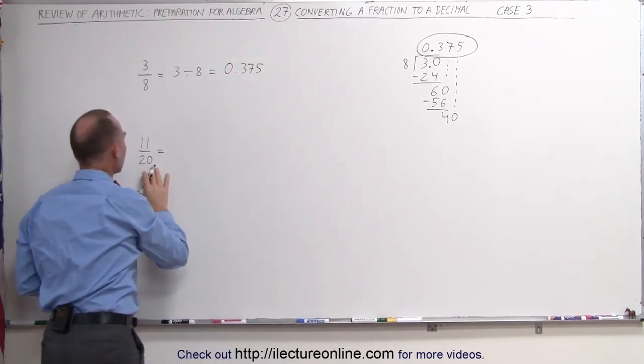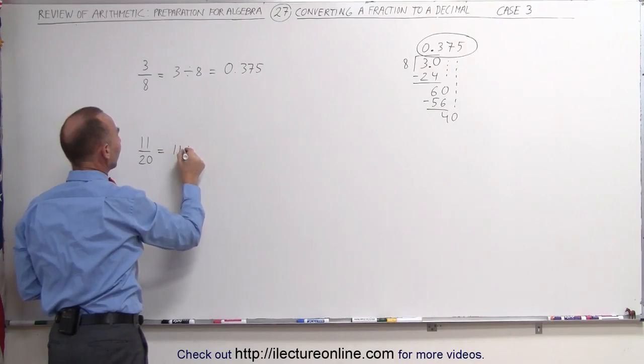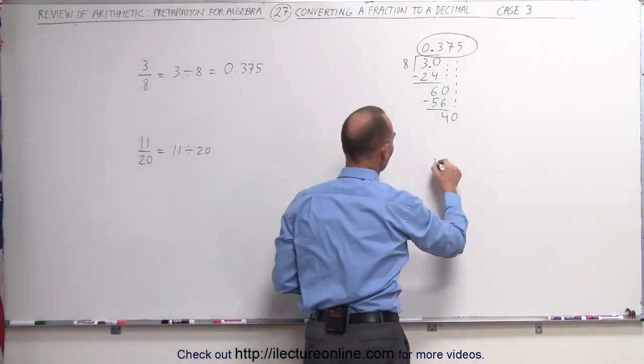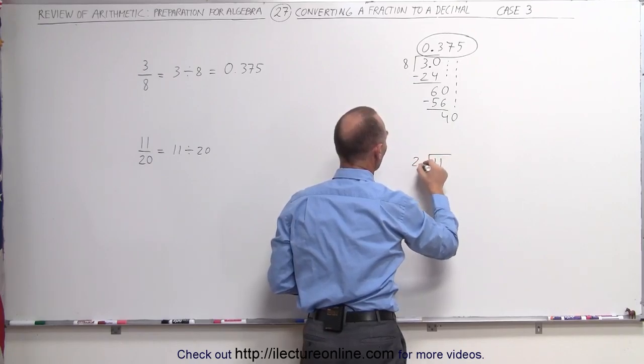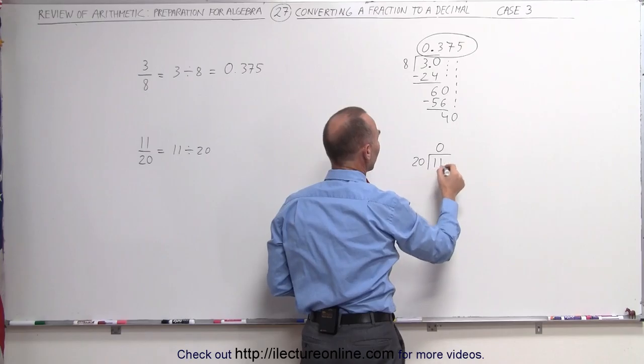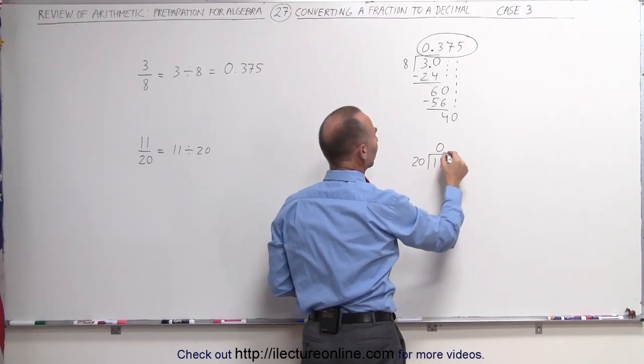Let's do the same with this number here. This really means that we have 11 divided by 20. So that's what we're going to do over here. We're going to take the number 11 and divide it by 20. Now 20 goes into 11 zero times, so we know that we have a decimal place there. We have a decimal place there. Now we add a zero.